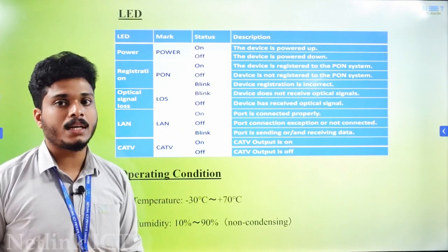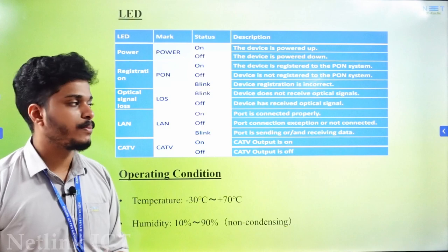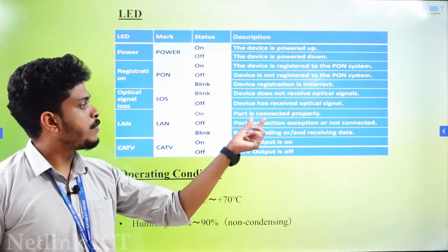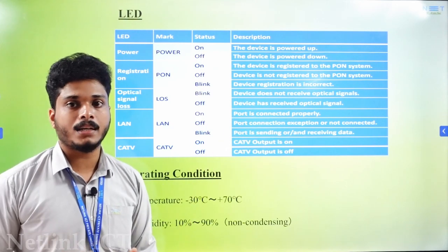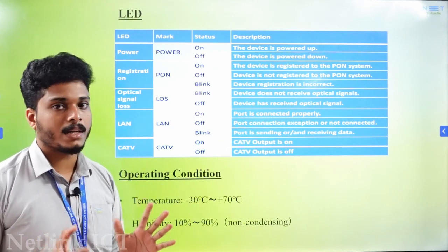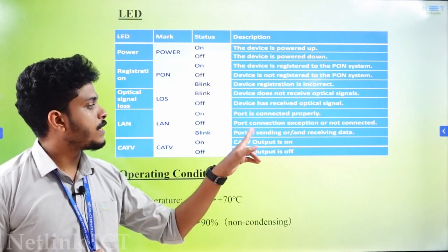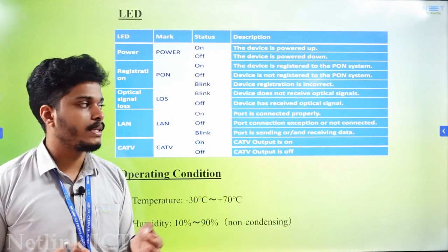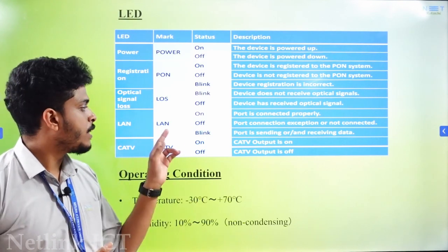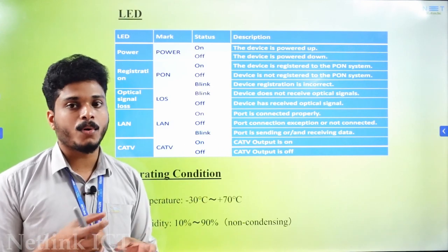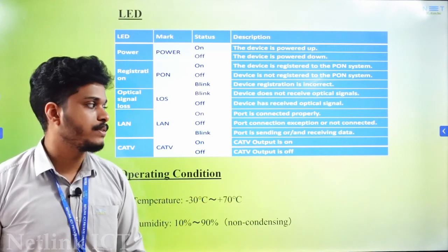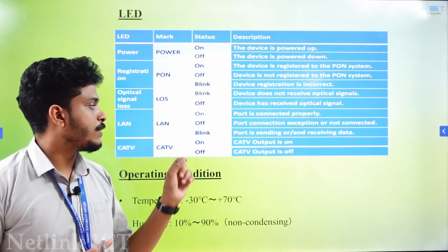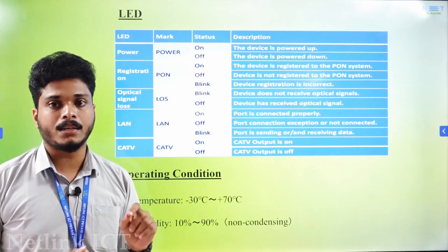If the LOS light is ON, it does not have an optical signal. The GE port indicator: if the port is connected properly, the light is ON. If OFF, the port is not connected. When it is BLINKING, the port is sending or receiving data — so if you are transferring data, the LAN light will blink.